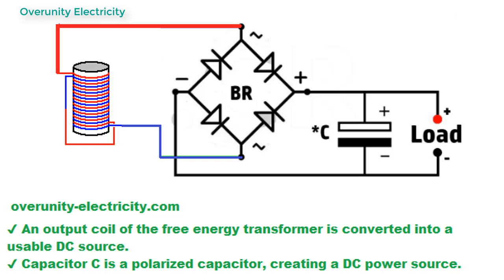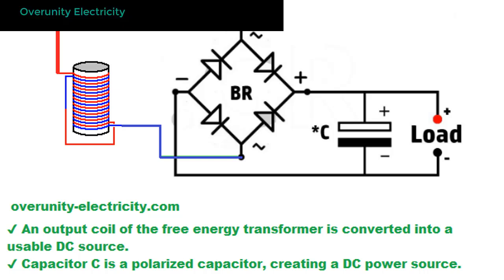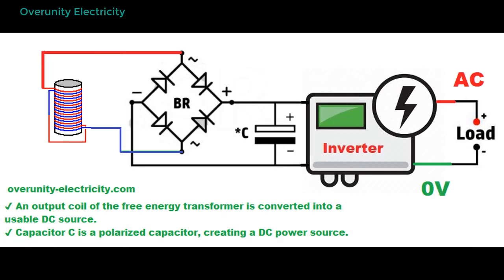Each output coil can operate independently or be combined. Connect them in parallel for higher current or in series for higher voltage. In practice, the coil's ferrite cores allow efficient high-frequency operation, enhancing energy transfer and minimizing typical losses.